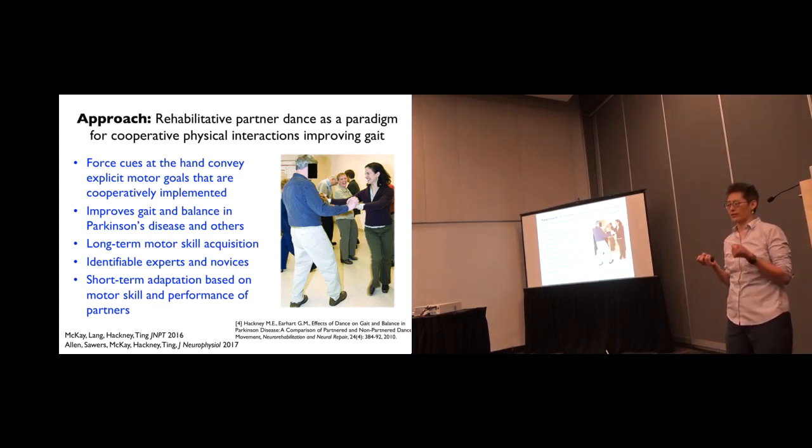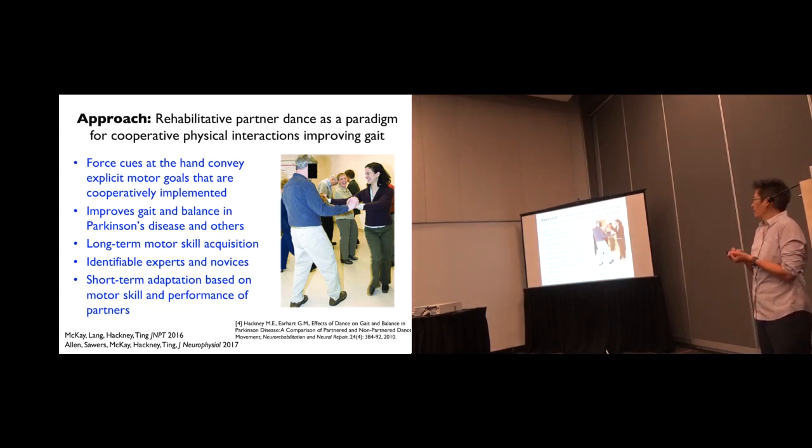And having participated in this class, it's really interesting to see how much can be done with the eyes closed. And you can tell what's happening. And I can tell somebody what to do. And so these cues are really conveying some motor goals. And those motor goals are fairly explicit because we have a pattern that we're supposed to achieve. And we know that this involves some long-term motor skill acquisition. And we can identify experts and novices.